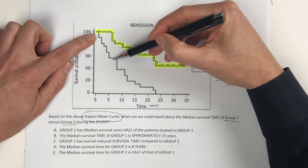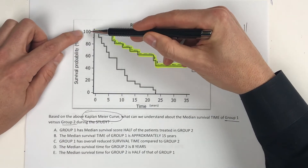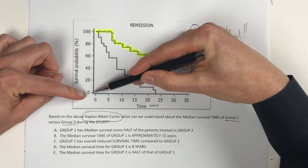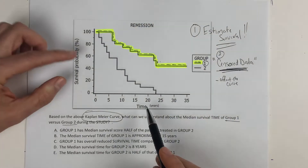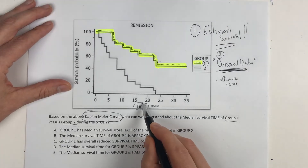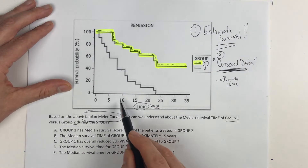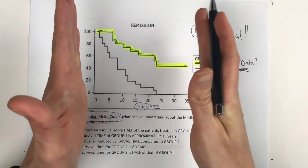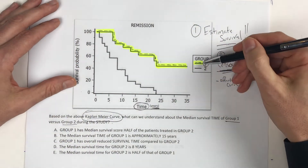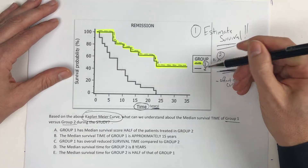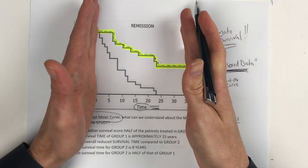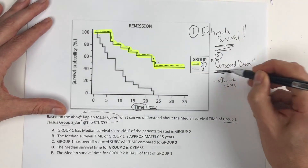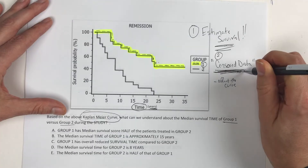Group one went this way and group two went this way. 100% of people were living at the start; here means 80%, 60%, 40%, and 20%. If you're down at the bottom, everybody's dead. So this Kaplan-Meier curve covers a 35-year period — say one group received a treatment, the second group didn't, and they followed them over 35 years to determine survival rate, incorporating censored data.